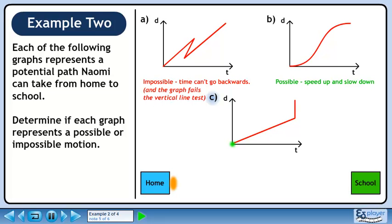Now we'll look at the graph in part C. In the animation, everything is fine until the graph hits the vertical region. The vertical region means that Naomi occupies more than one position at the exact same time, which is impossible.